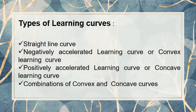Depending upon the nature of the material and the nature of learner involvement, curves form differently in shape. There are four types of learning curves: straight line curves, negatively accelerated learning curve (convex), positively accelerated learning curve (concave), and combinations of convex and concave curves.